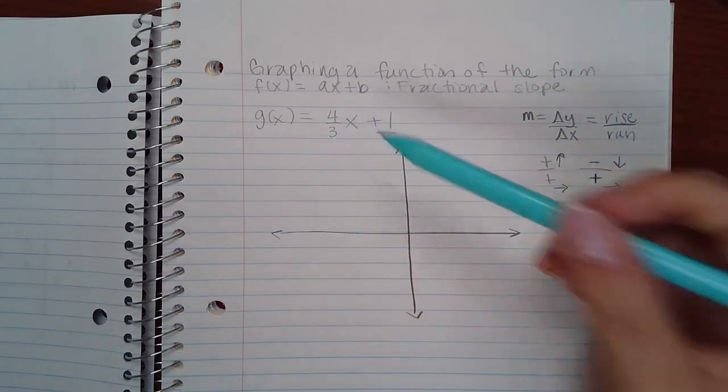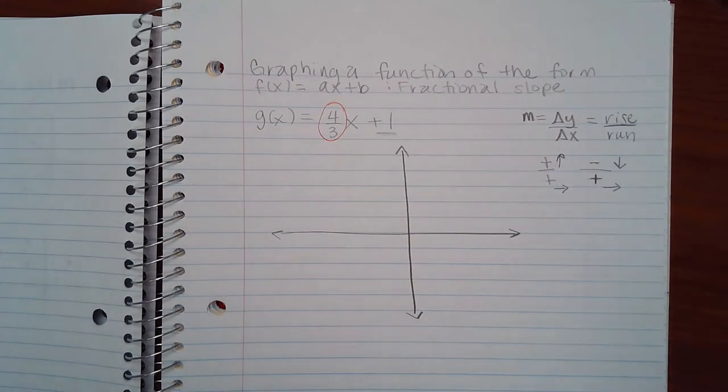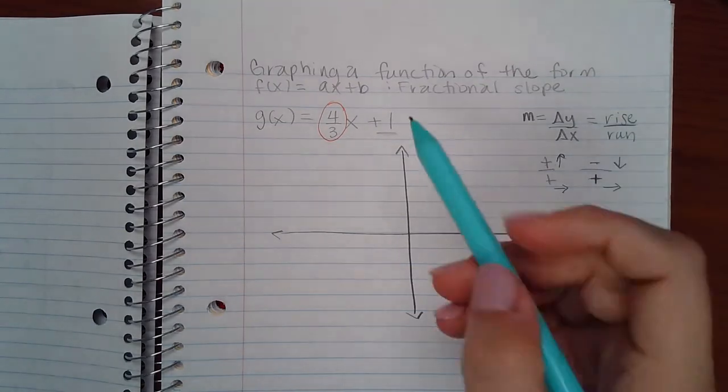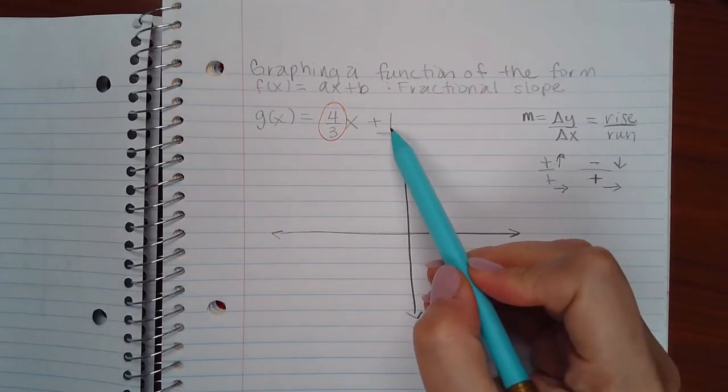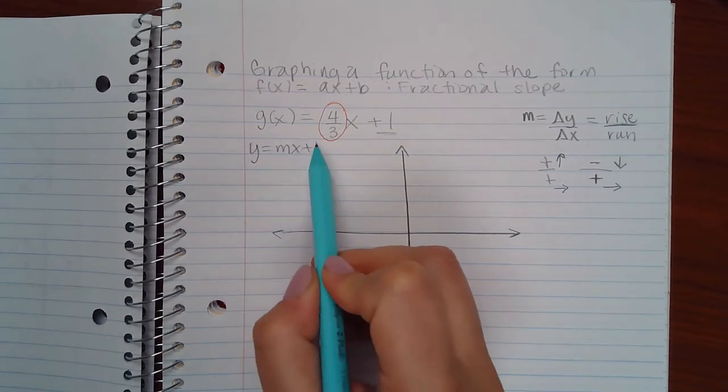So in this case, our slope is 4 over 3. And if you begin with your y-intercept, so we're used to seeing things in this form, right? Mx plus b.